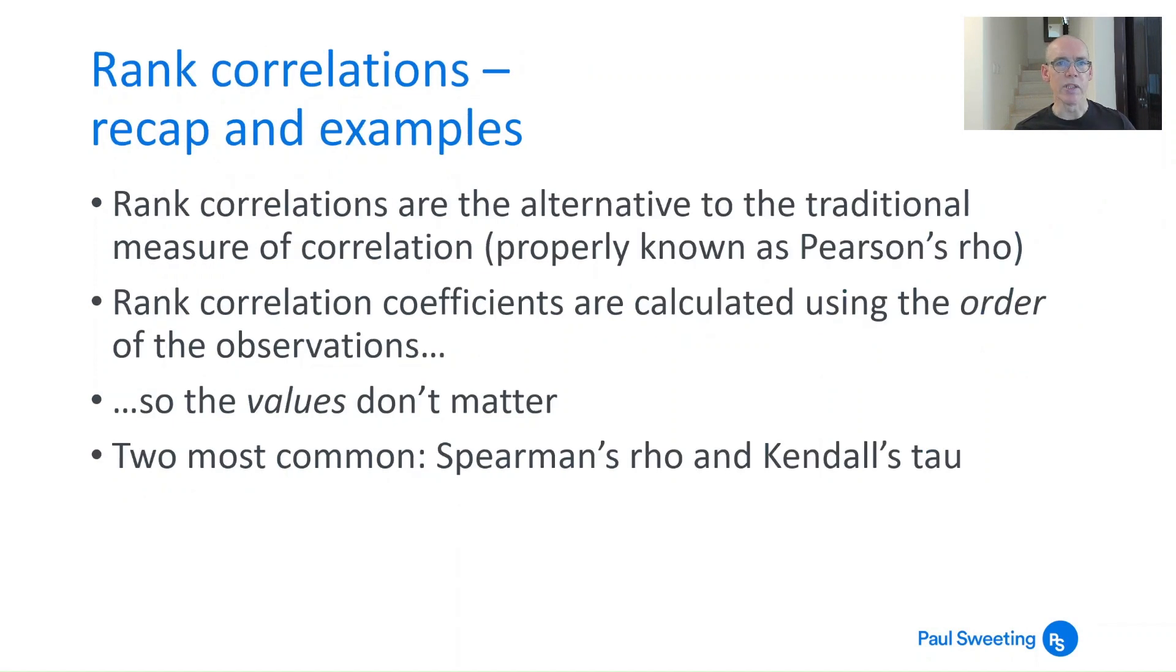I did cover rank correlation coefficients a little bit in the last lecture I did almost two years ago, and I'm going to dive into that in a little bit more detail this time. Rank correlations are alternative to the traditional measure of correlation. If you put in equals COREL in your Excel spreadsheet, what you're actually calculating is Pearson's rho, Pearson's product moment correlation coefficient.